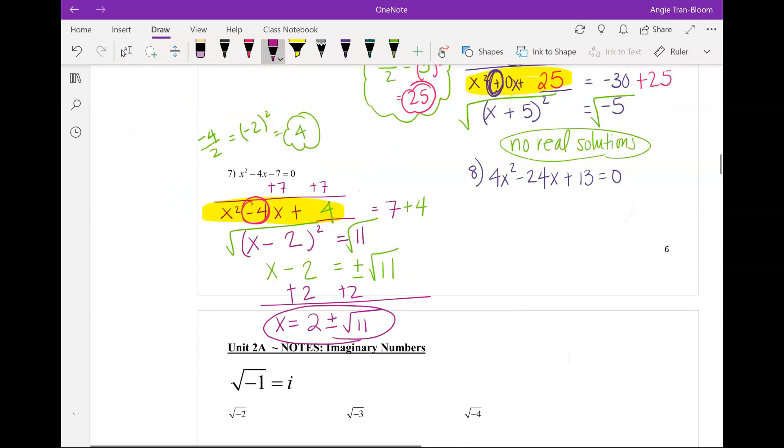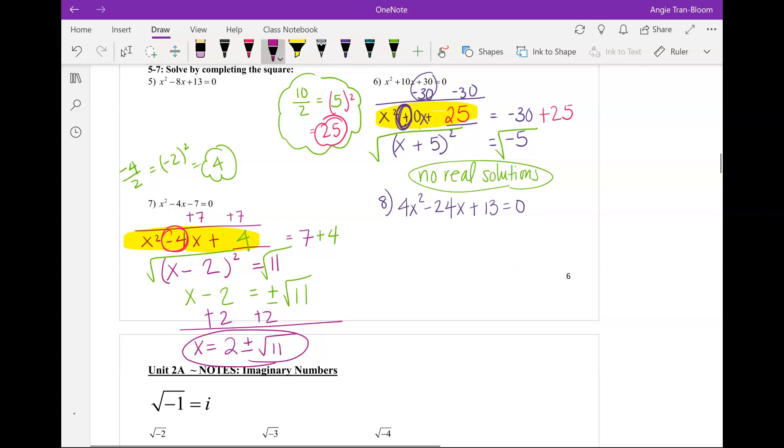Now, we have one last example. How are 5, 6, and 7 different from 8? 8 has an A value, which is 4. That's not the same as the first 3. 5, 6, and 7, they all have an A value of what? 1. 5, 6, and 7 are so much easier than 8. So, the first thing we have to do on 8 is still similar. We have to move the C to the right.